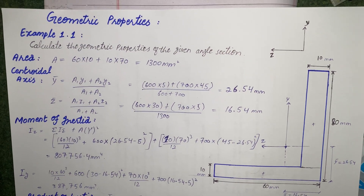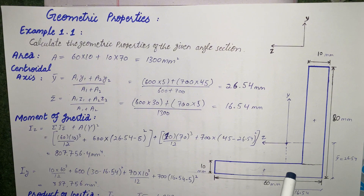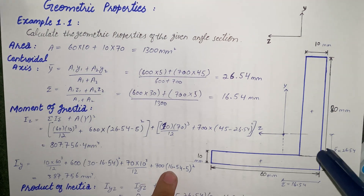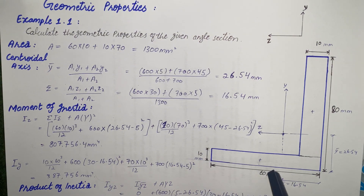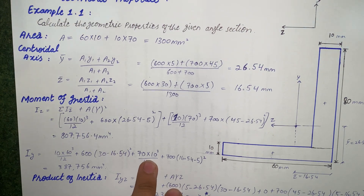Welcome to our YouTube channel COD Engineering Academy. In today's video we will discuss the problem of geometric properties. We have an angle L-section, and we have to calculate different geometric properties like area, centroidal axis, moment of inertia, product of inertia, and polar moment of inertia. The dimensions of the L-section are also given.